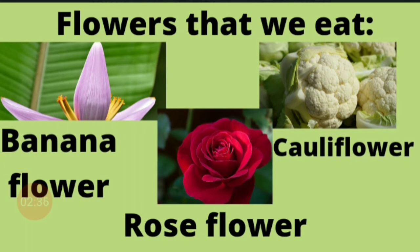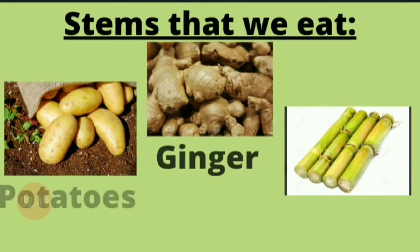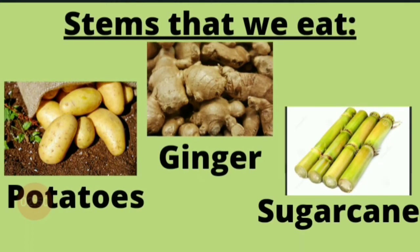Flowers that we eat. Jadon ke saath saath, hum kuch phoolon ko bhi khaate hai — jaise banana flower, cauliflower, rose flower, kachnaar flower. Baccho, rose flower ki pankhudiyaon se toh gulkand bhi banta hai.